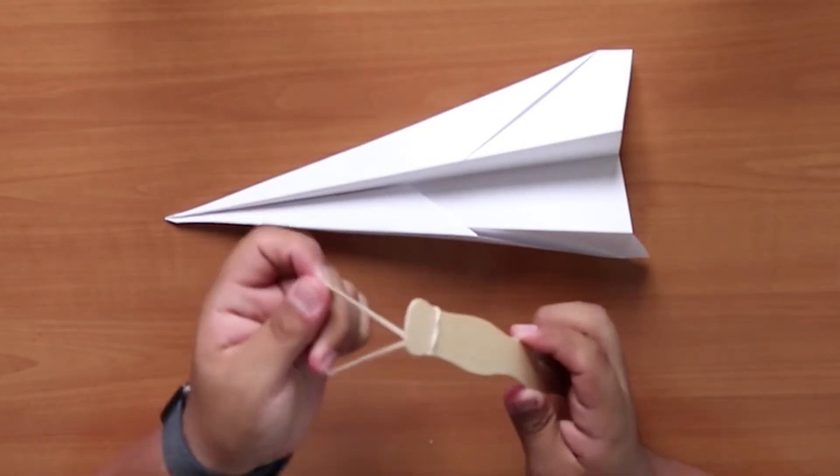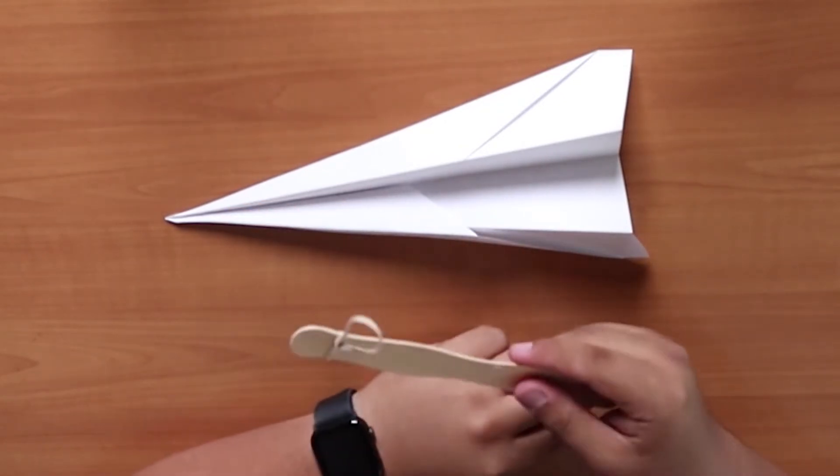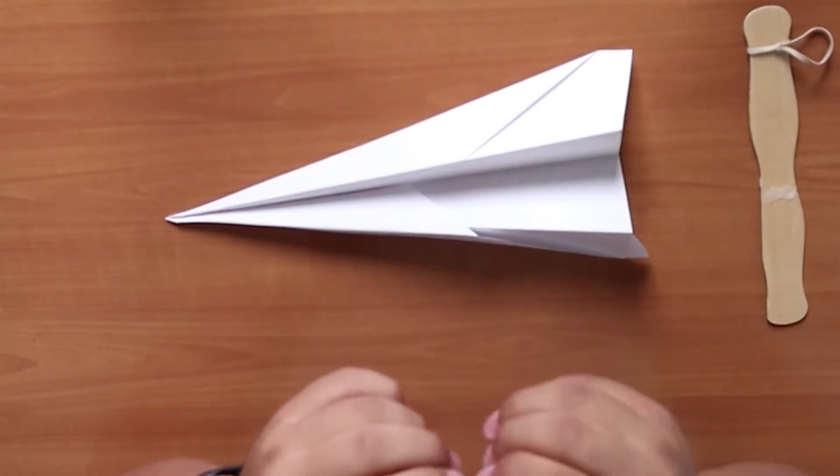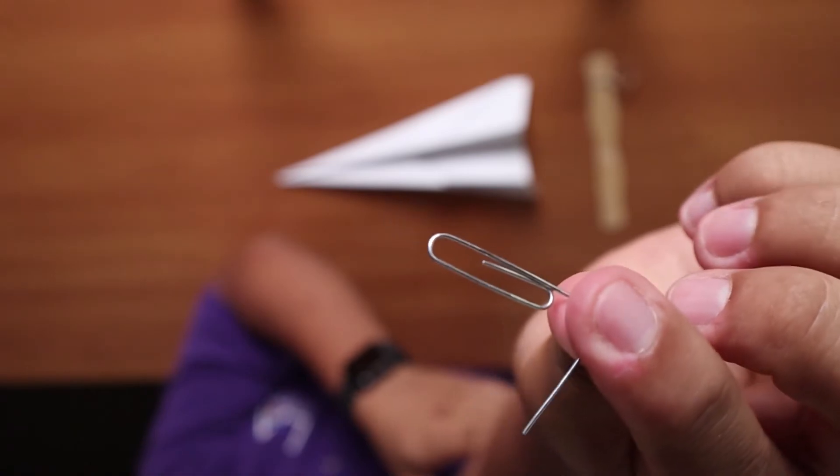The best way to make the knot is to use one hand to keep the knot stable and the other to pull back on the rubber band. Now, let's put this aside and grab our paper clip. Create a 90 degree angle with the end of the paper clip.